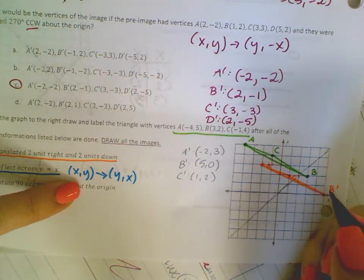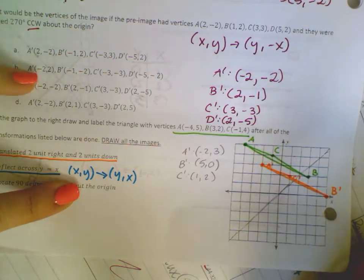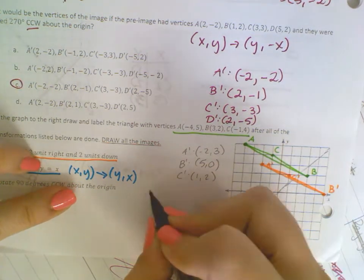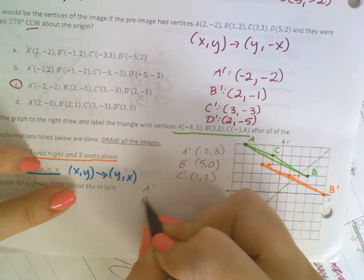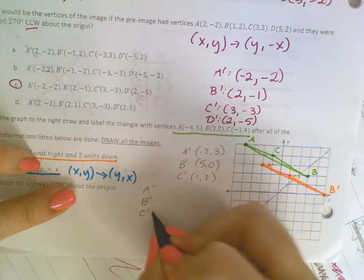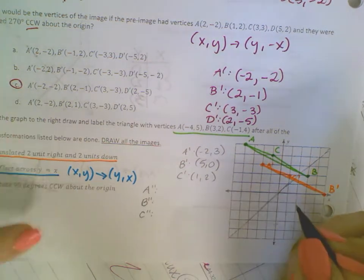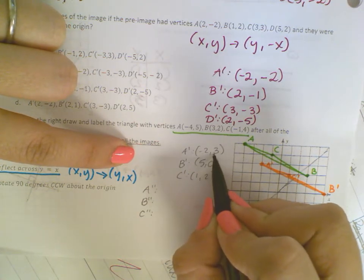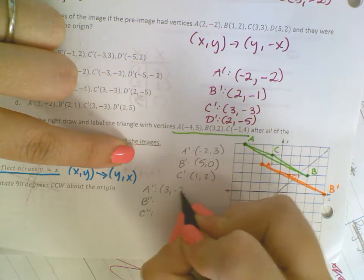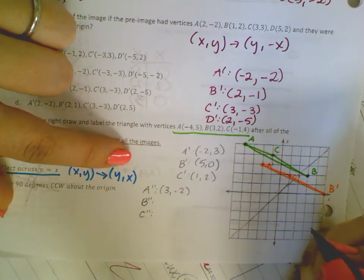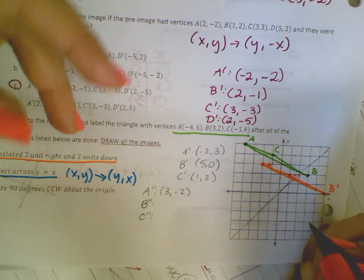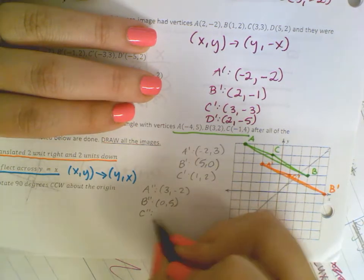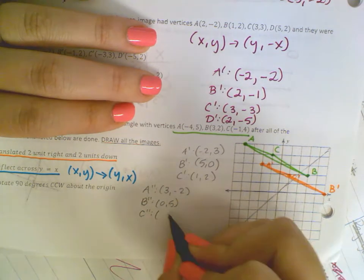So now, for my double primes, because this came from my orange to get to blue, I'll have A double prime, B double prime, and C double prime. I'm just going to be switching these. Instead of negative 2, 3, it'll be 3, negative 2. The signs are not changing. All that's changing is we're flipping the numbers. So instead of 5, 0, it'll be 0, 5. And instead of 1, 2, it'll be 2, 1.